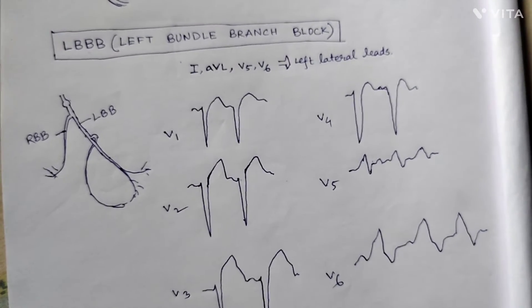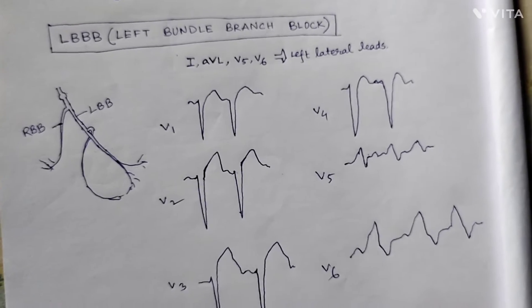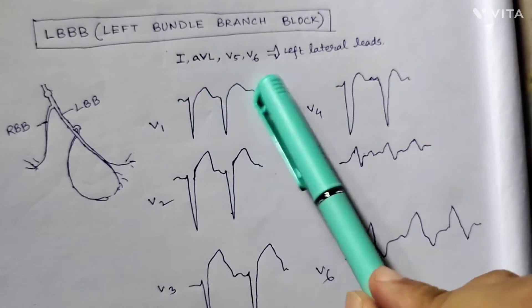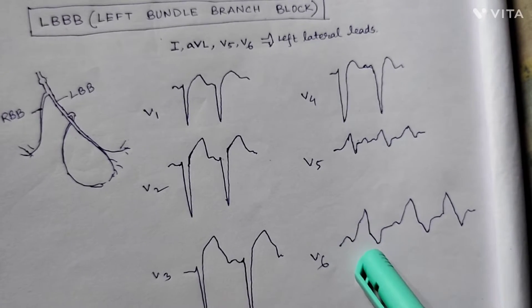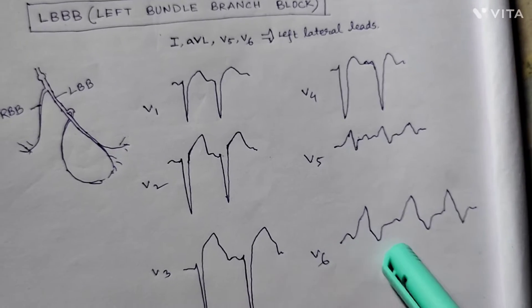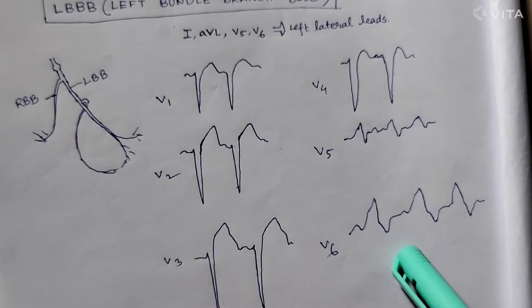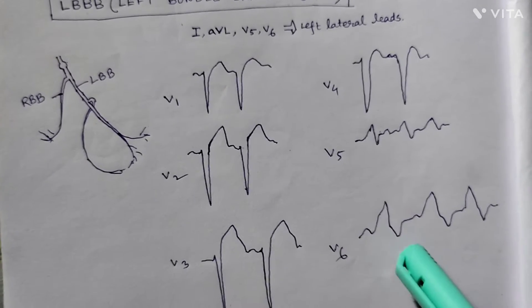The left bundle branch block pattern will be found in these leads, the left lateral leads. If we take a look at V6 here, you can see that the QRS complex is wide and the ST is depressed.